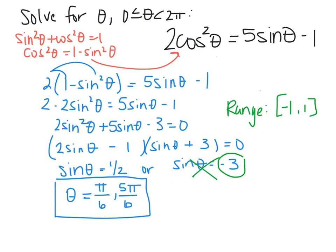So this was solving trig equations. You want to isolate your trig function if there's just one and find what angle makes it true. If it has squared trig functions, make it look like a quadratic, and some of those require identities. As we move through chapter 7, we'll learn new identities that can be applied back to these trig equations as well.